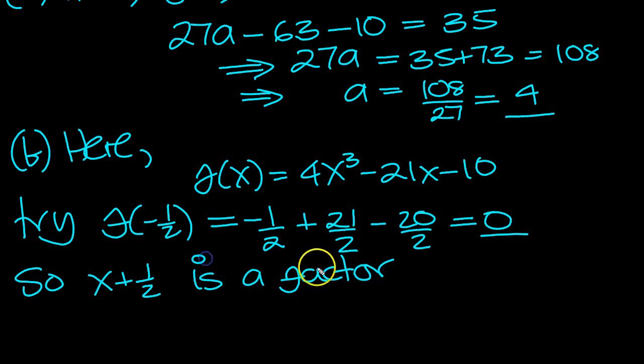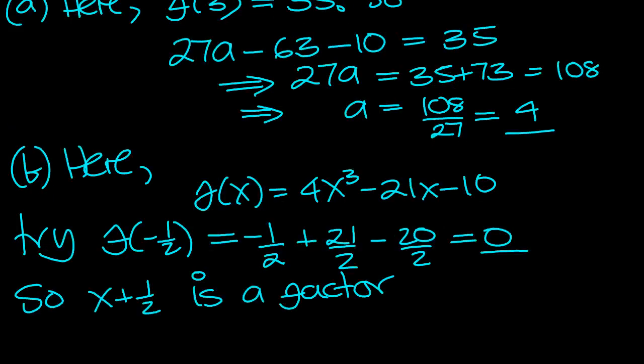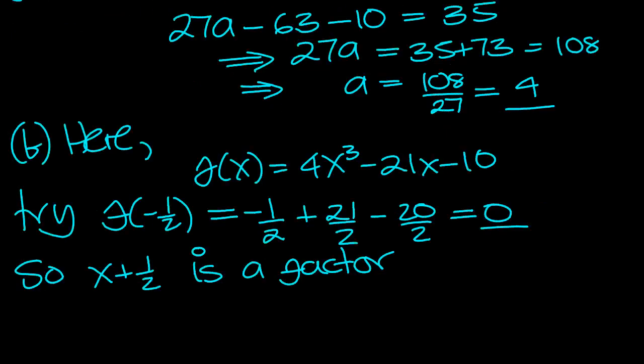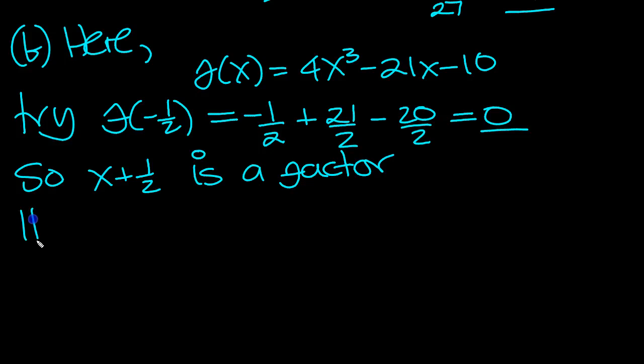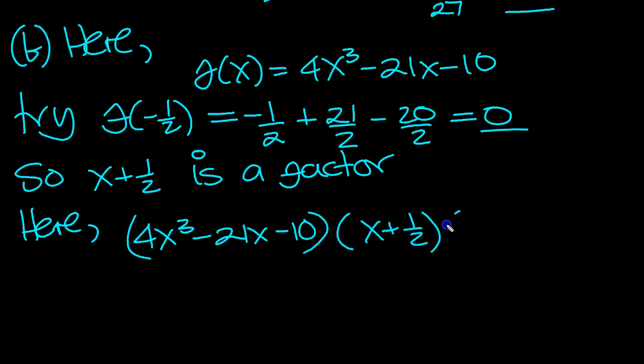So we can do division now, or we can just look at a bracket. 4x cubed minus 21x minus 10 is going to equal x plus a half times ax squared plus bx plus c. Now we need to find out a, b, and c.